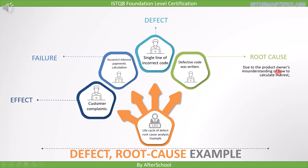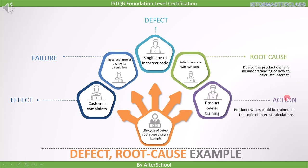The product owner didn't know how to calculate interest, but we can't stop there. We have an entire team, so how could the product owner make this mistake? What we do next is called action — we figure out what to do so this never happens again. We train the product owner in interest calculation so they will not repeat this mistake. This is how root cause analysis works: it starts from an effect, which is the complaint, and ends with an action to correct the root cause.